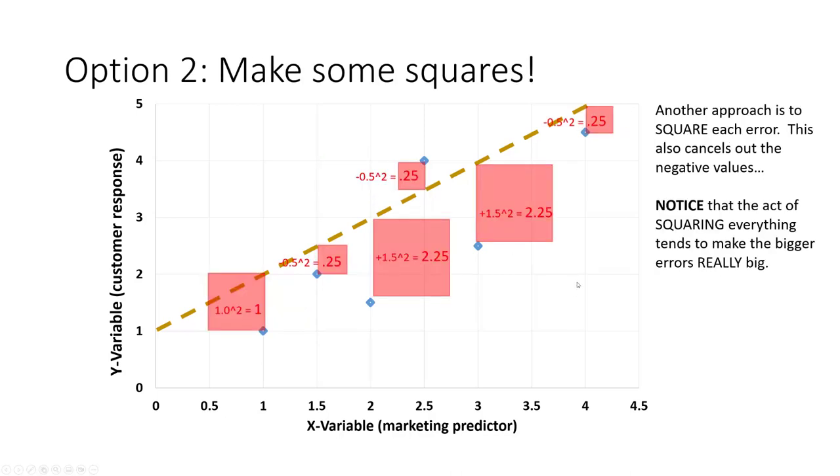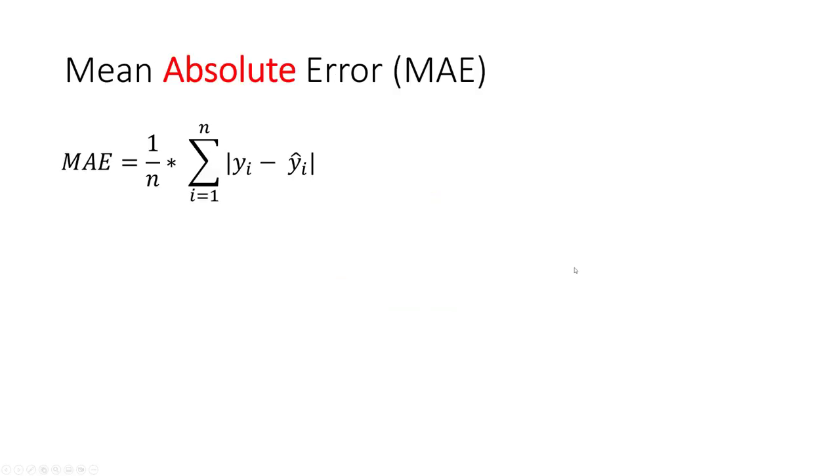The second common way that we calculate error is we literally just make squares. Rather than taking just the line as a depiction of error, we literally take the measurement of the error and square it. By squaring it, we make a square and calculate the area of that square. These two approaches, taking the absolute value or deriving the square, are probably the two most common ways that we calculate the poor performance or lack of performance in our models.